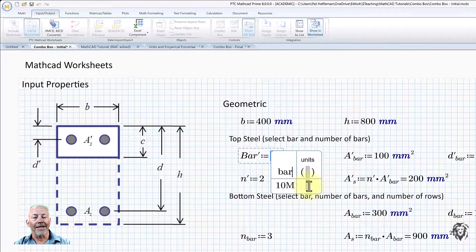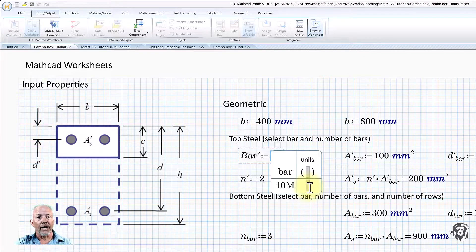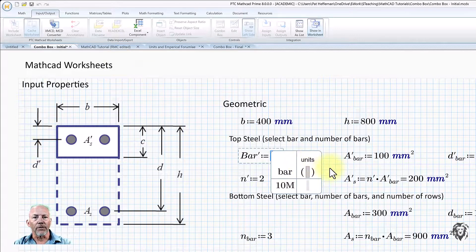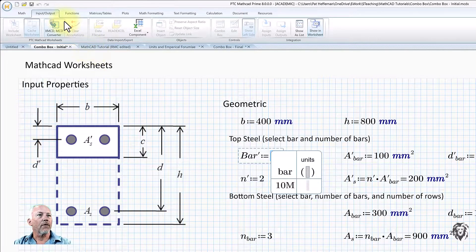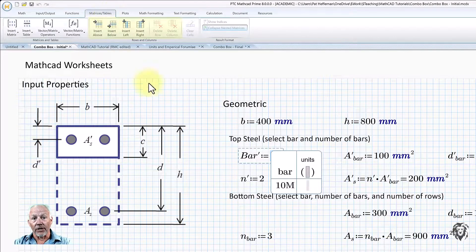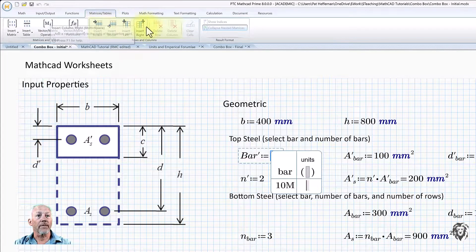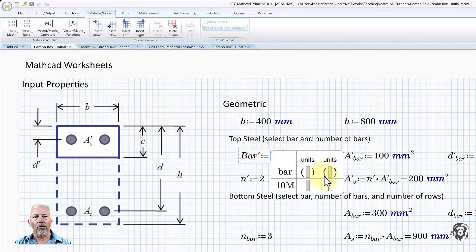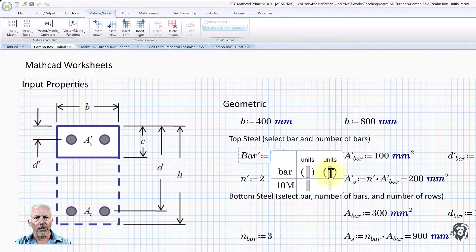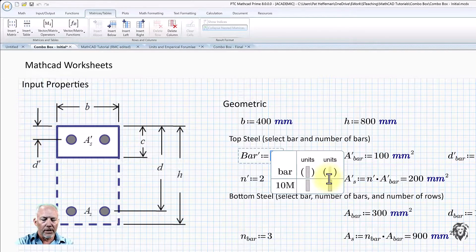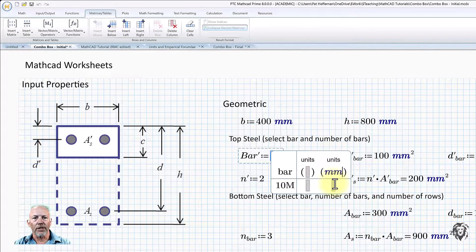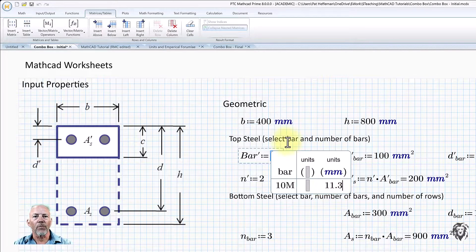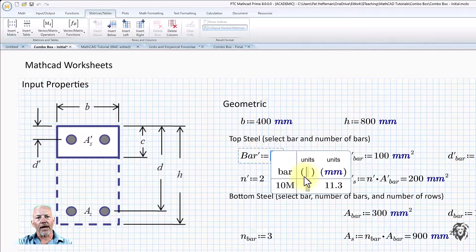And then what we need is a couple different columns where we're going to have the area for the bar and the diameter. And so we need to add another column. All of this is done as if it's a matrix, which effectively it is. And so these are the commands we can use to expand the number of rows and columns. So I'm going to insert a row to the right. And we're going to put our diameter over here. So we have to give it the units. And a 10M bar has a diameter of 11.3 millimeters.